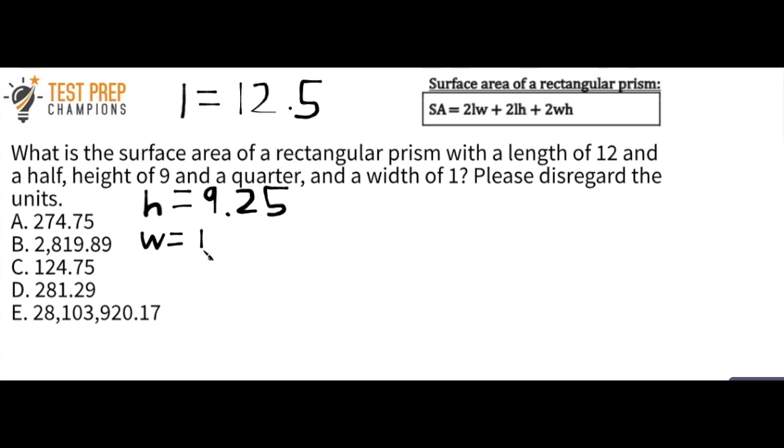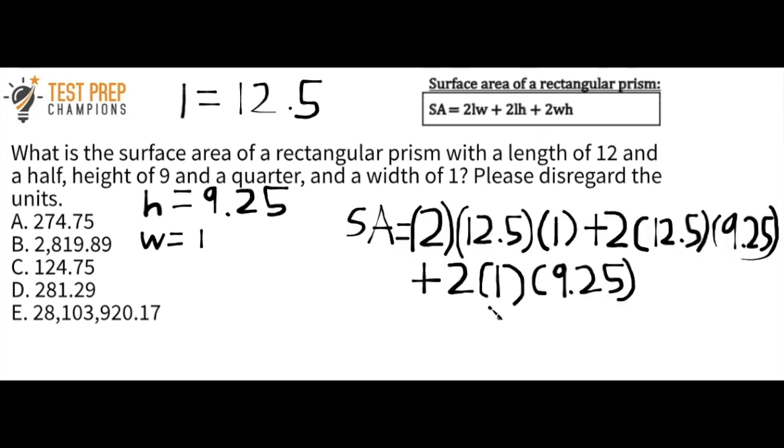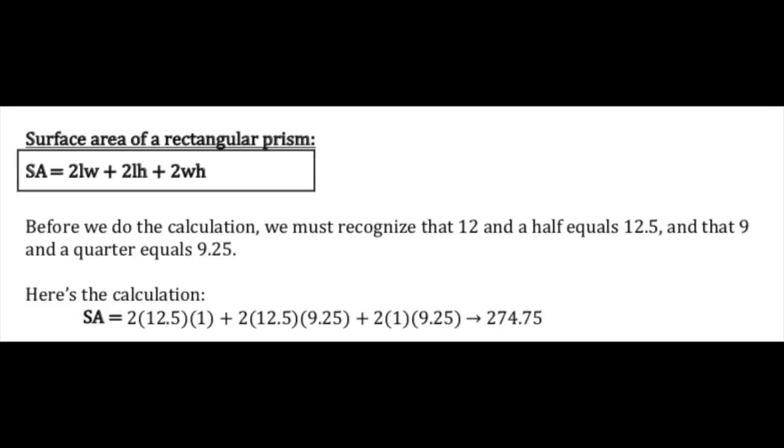Okay, so now all I'm going to do is I'm going to come up here into this formula. And everywhere in the formula where I see an L, I'm going to write 12.5. And everywhere where I see a W, I just put 1. And everywhere where I see an H, I'm going to put 9.25. So when we write it all out, we should have 2 times 12.5 times 1 plus 2 times 12.5 times 9.25 plus 2 times 1 times 9.25. And you really don't even need to put these ones in here because it's not going to change anything. But what I would recommend is just put this all in your calculator. And the answer we get is 274.75. A is the correct answer.